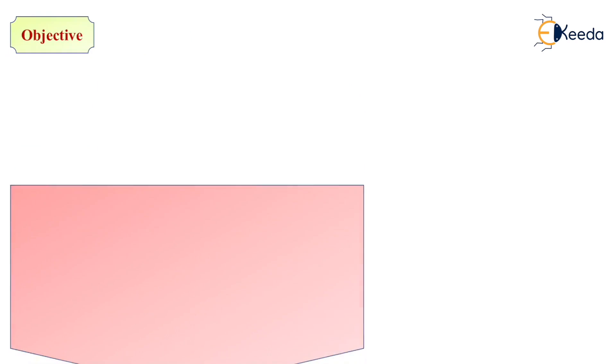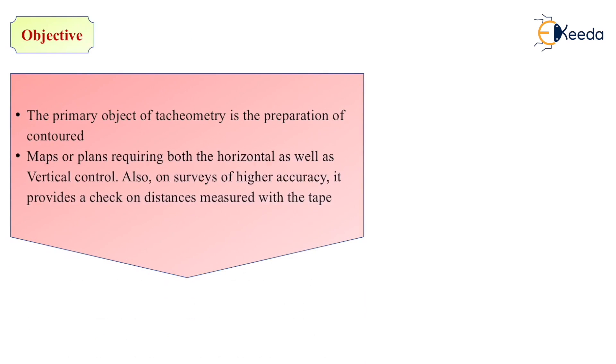The objectives of tachometry are: the primary objective of tachometry is the preparation of contoured maps or plans requiring both the horizontal as well as vertical control. Also on surveys of higher accuracy it provides a check on distance measured with the tape.